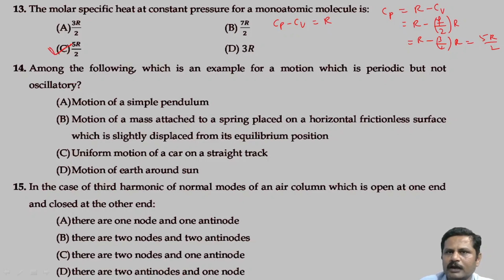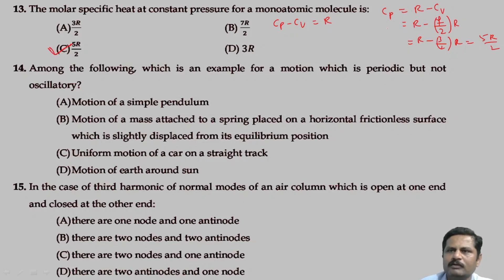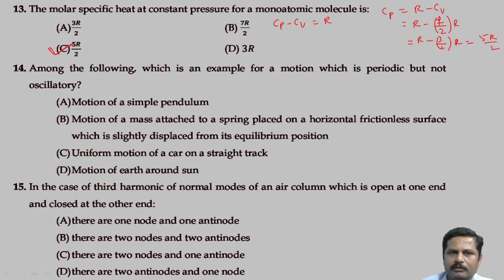Suppose if it is a diatomic molecule, we have to substitute f equals 5 (or 6), and we will get the molar specific heat capacity at constant pressure for the respective molecule.